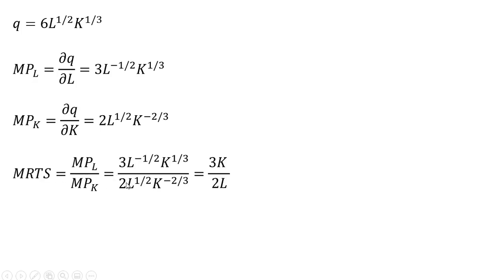Forming the marginal rate of technical substitution and simplifying: we're going to move this L to the minus 1/2 down into the denominator — that's where this L is coming from. And then we're going to move this k to the minus 2/3 up into the numerator. So in the numerator you'll now have k to the 1/3 times k to the 2/3, which is just k.